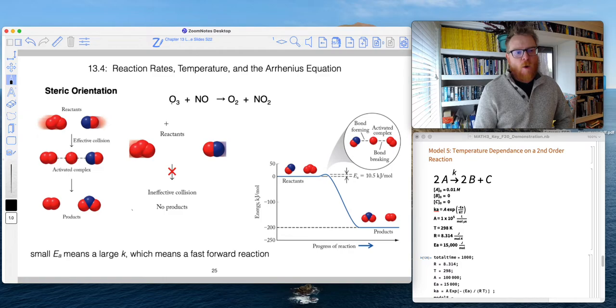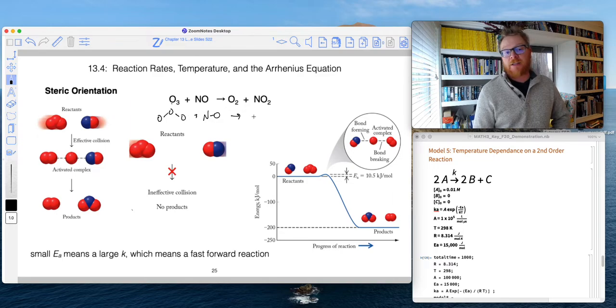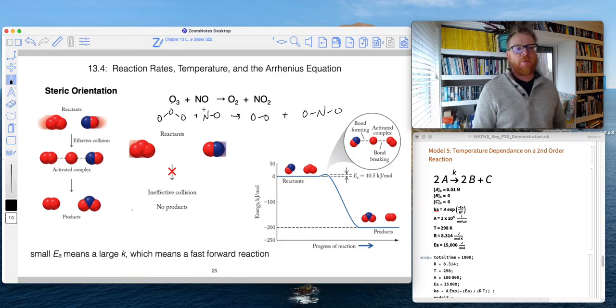so I'm just going to draw a very abbreviated version of the Lewis structure here. So you can see what we need to do is create a new oxygen-nitrogen bond because in our final reactants, we have an O-O and an O-N-O. I know these aren't the complete Lewis structures, but just bear with me here.